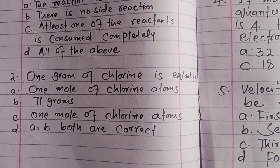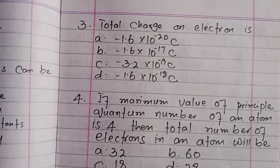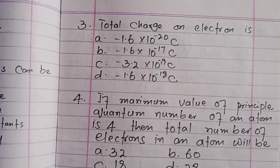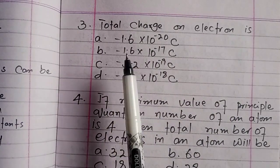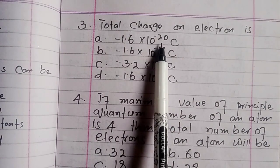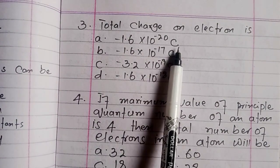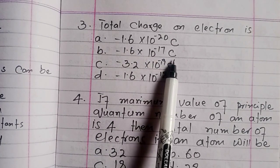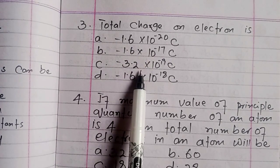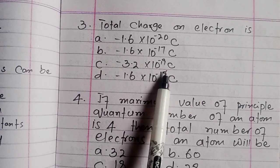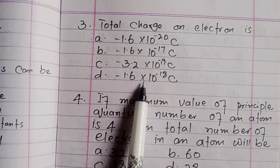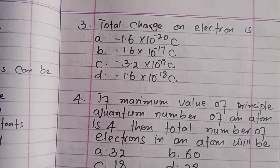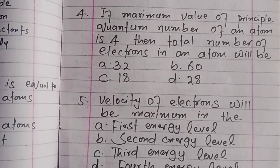Question 3: What is the total charge on an electron? The options are: minus 1.6 × 10⁻²⁰ C, minus 1.6 × 10⁻¹⁷ C, minus 3.2 × 10⁻¹⁹ C, or minus 1.6 × 10⁻¹⁸ C. Write in the comments which answer you think is correct.